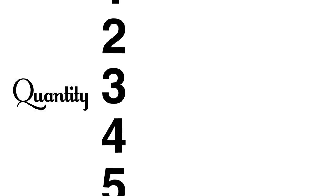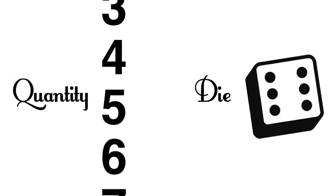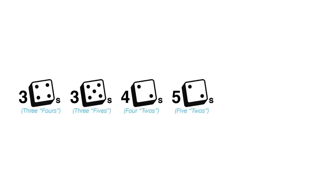A proper bid is a quantity and then a die number. Here is an example of a sequence of bids: three fours, three fives, four twos, five twos, five sixes, six ones.